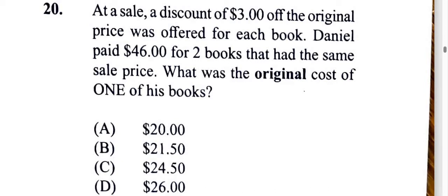At a sale, a discount of three dollars off the original price was offered for each book. Daniel paid $46 for two books that are the same sale price. What was the original cost of one of his books?